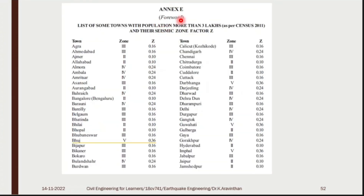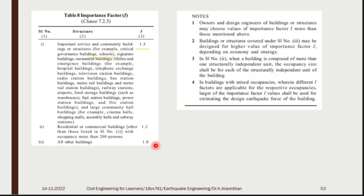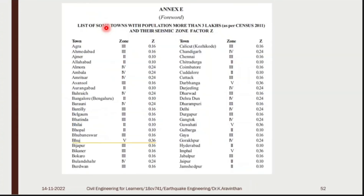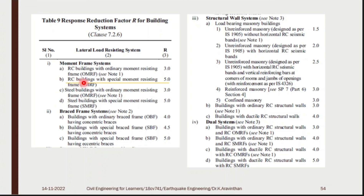From Annex E (list of towns with population more than 3 lakhs), Booch is in seismic zone 5. From Table 8, for importance factor I: schools fall under Category 1 (critical/governance/school buildings), so I = 1.5. From Table 9, for an RC building with Special Moment Resisting Frame (SMRF), the response reduction factor R = 5.